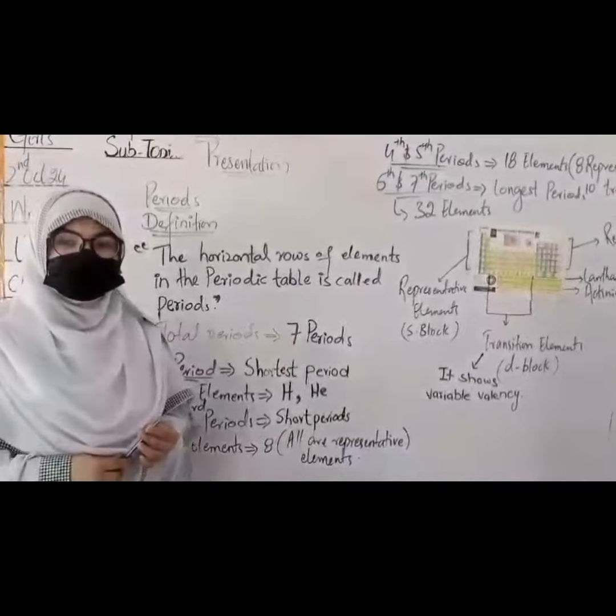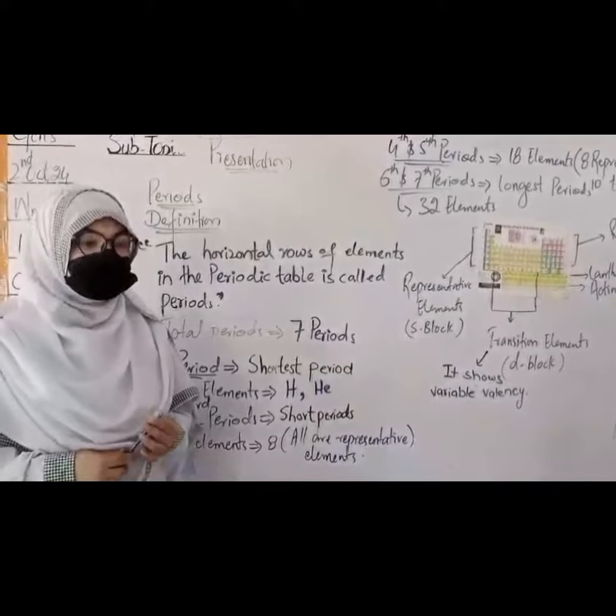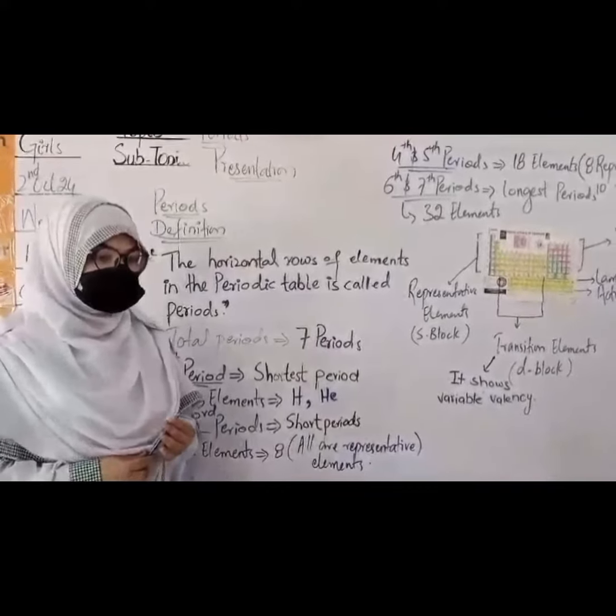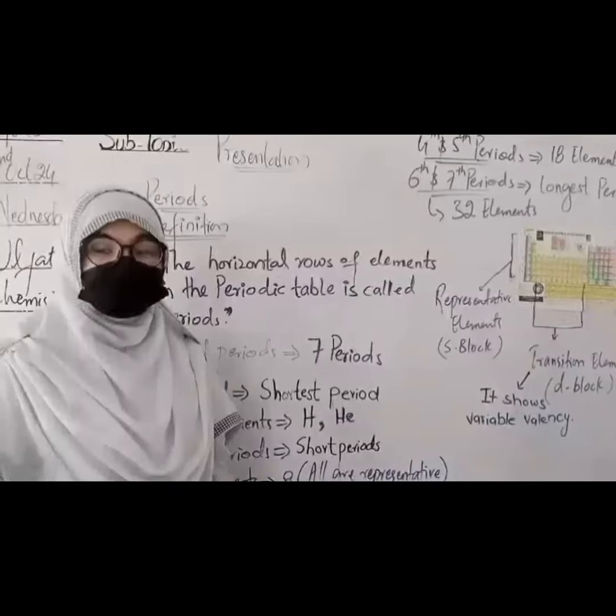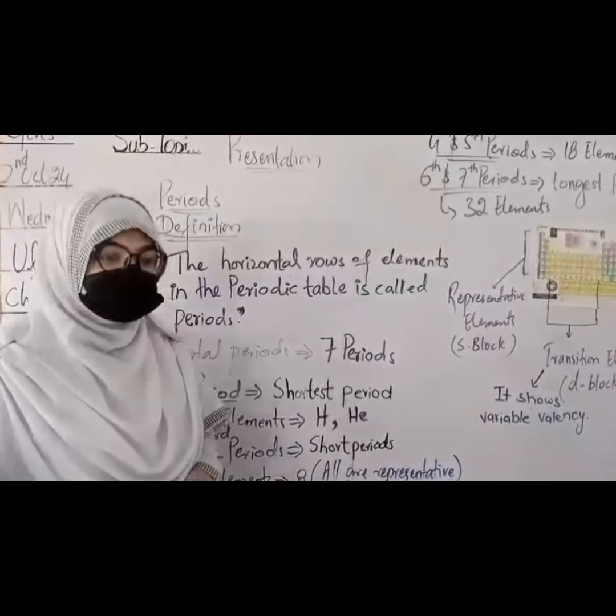Some questions. Can anyone define what a period is? — The horizontal rows of elements in the periodic table are called periods. Good job, Mansa.